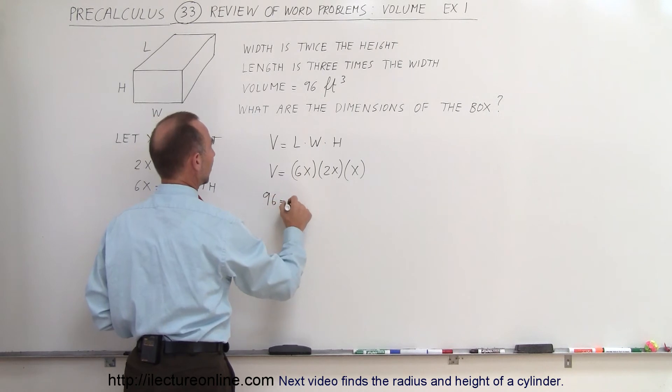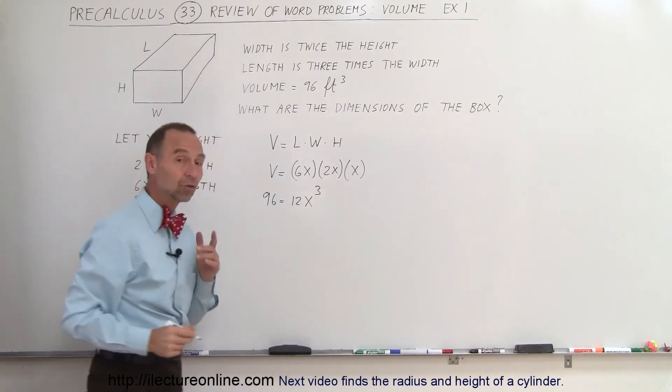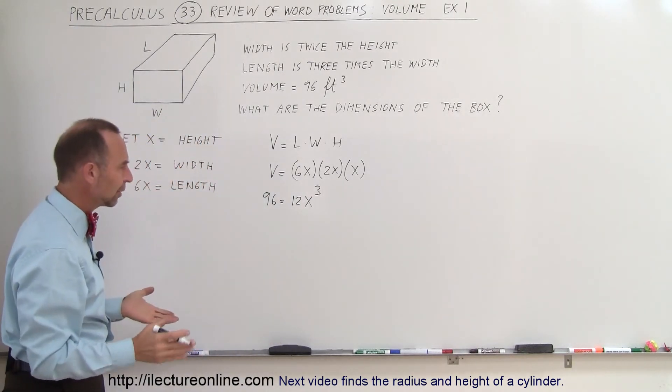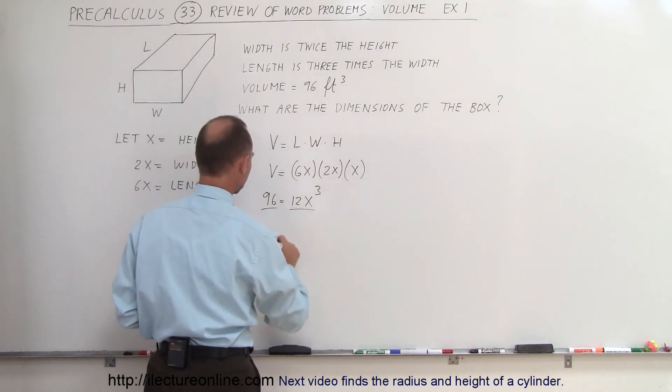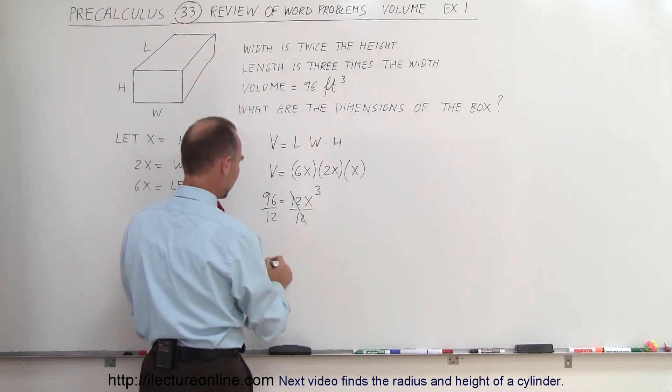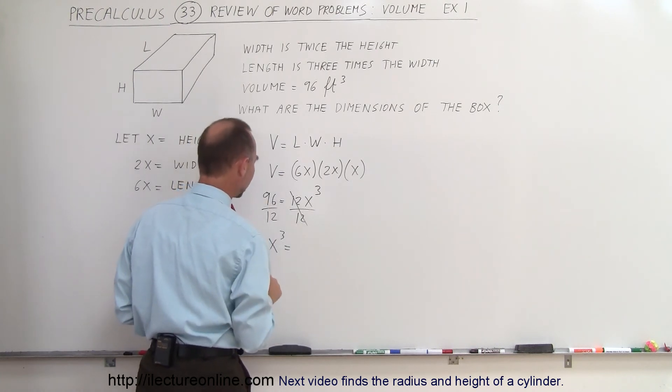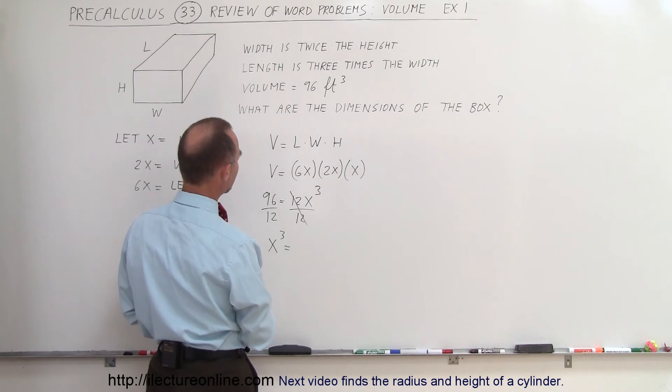So we can say that 96 is equal to 6 times 2, which is 12x³, and then all we have to do here is solve this for x. Well, first of all, we can divide both sides by 12, so that cancels out, and I'm going to reverse the equation, that means that x³ is equal to 12 goes into 96, let's see here, 8, 8 times.